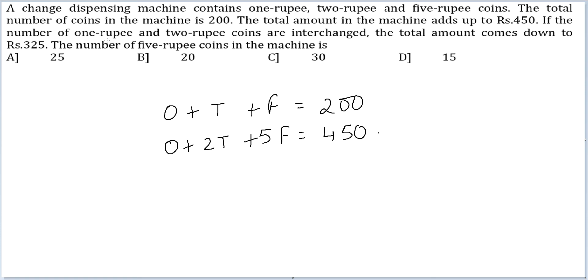What else do we know? If the number of 1 rupee and 2 rupee coins are interchanged, the total amount comes down to rupees 325. So 2O plus T plus 5F equals 325.